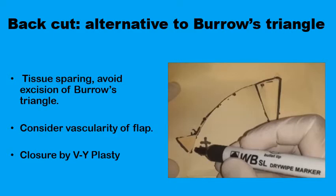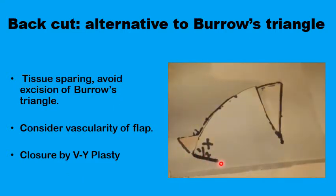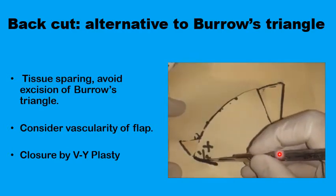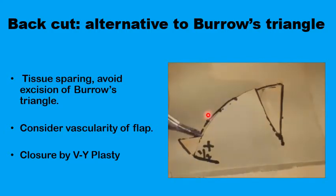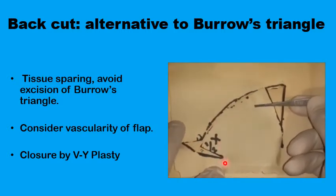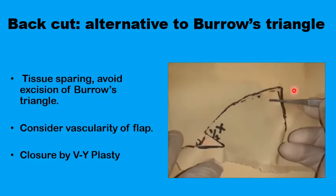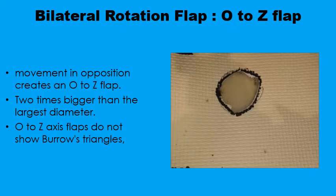One alternative to excising Burow's triangles, if you don't want to discard viable tissue, is to make a back cut at the other end of the curvilinear line. Rather than excising the triangle, you make a back cut, ensuring you are not compromising the blood supply coming from the base. Once the back cut is in place, the flap is mobilized into the defect. The defect formed by mobilizing the flap away from the back cut is usually closed in a V-to-Y type of reconstruction. In the case of bilateral rotation flaps from either side going in opposite directions, you end up with an O-to-Z type of reconstruction.